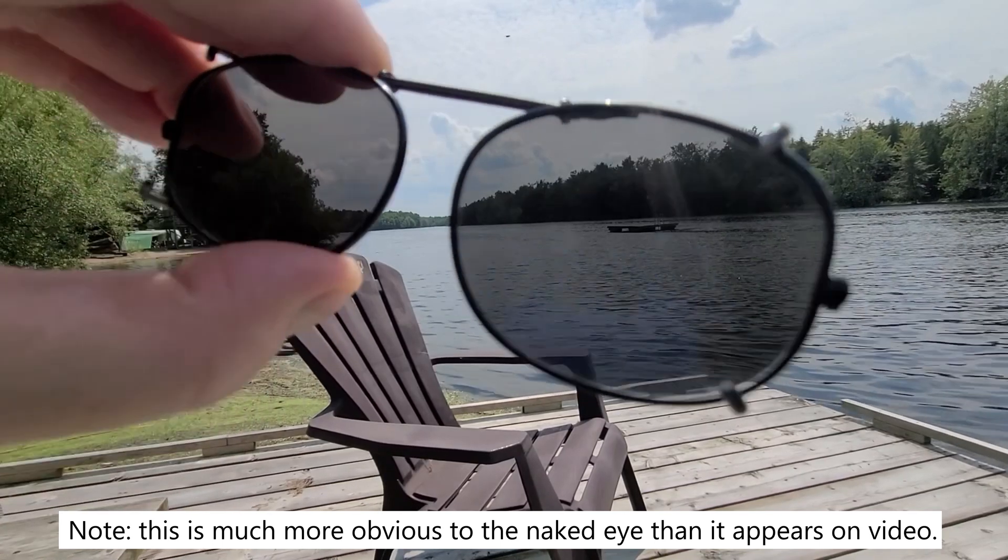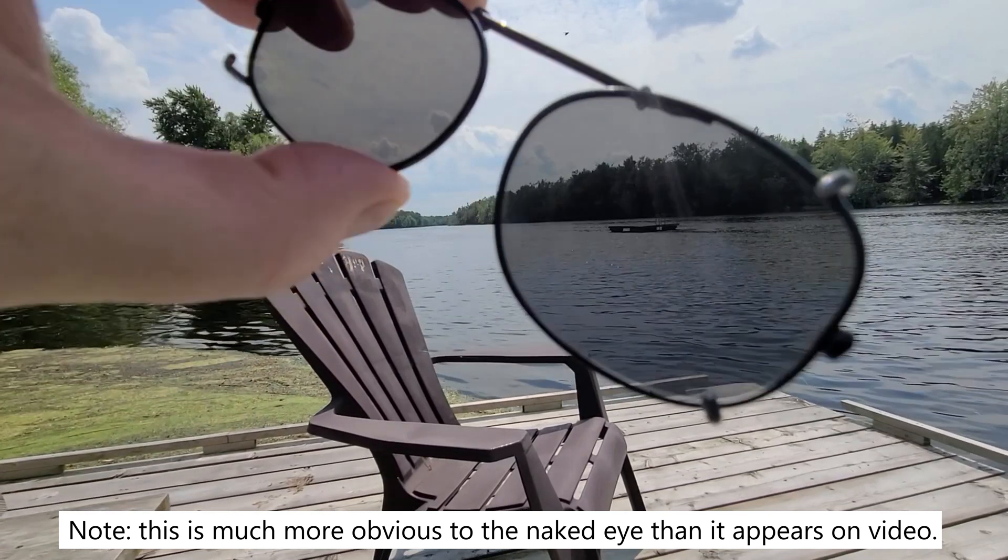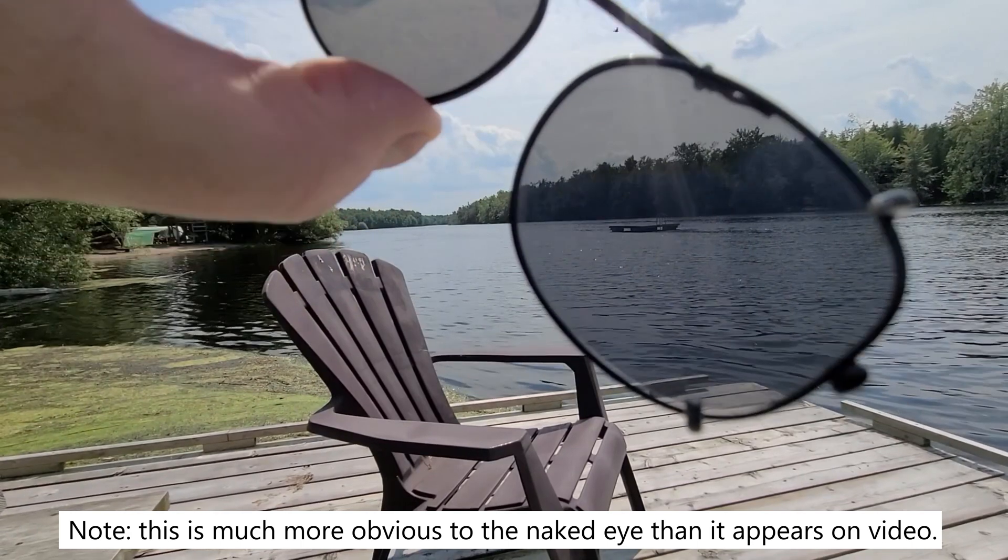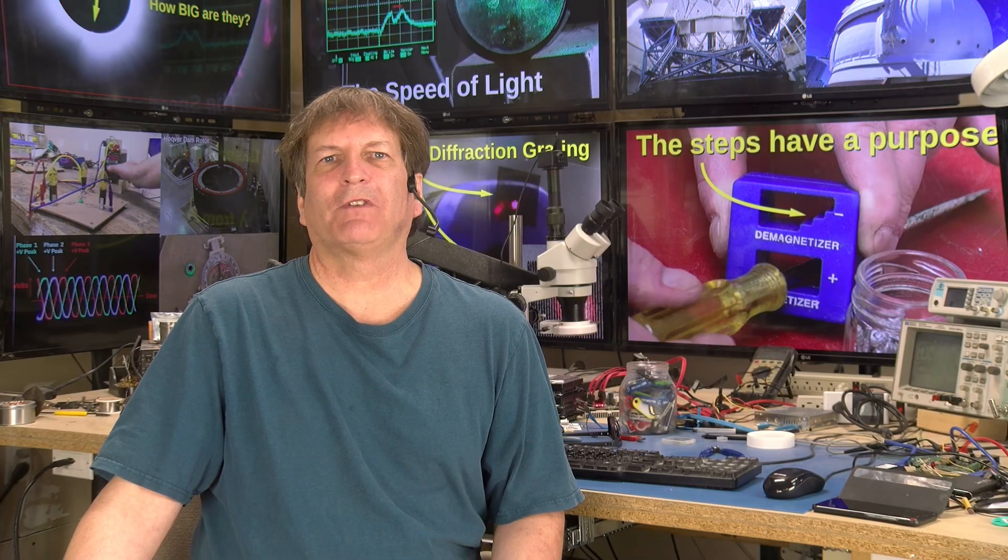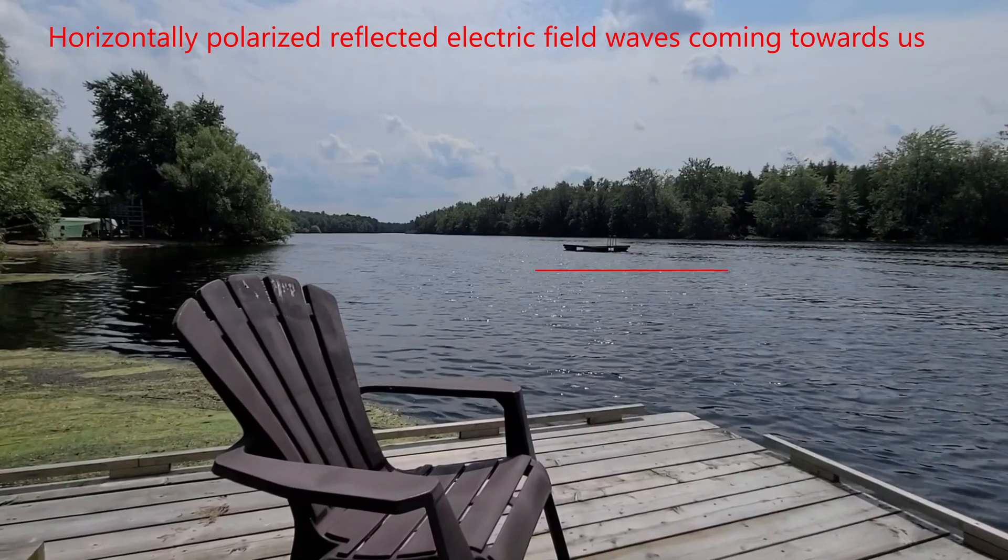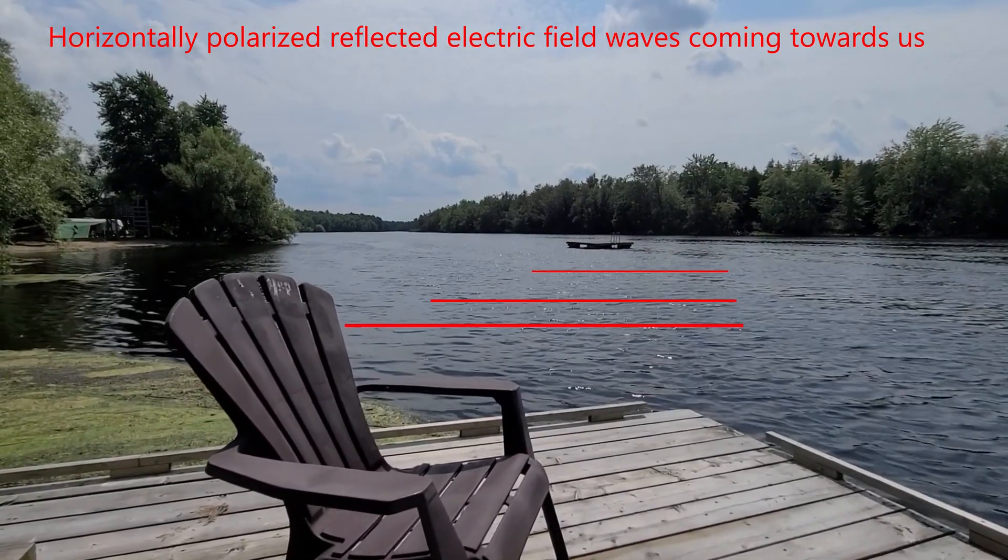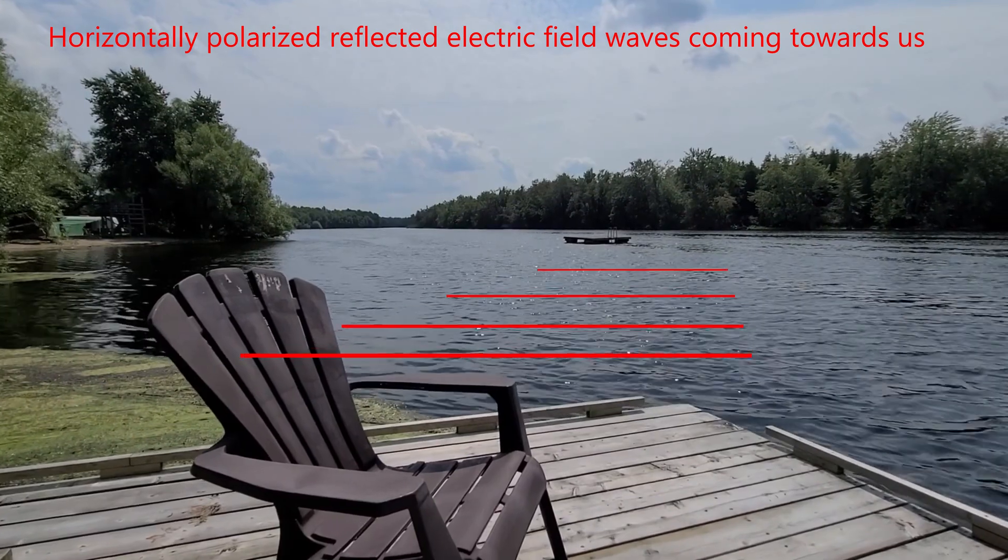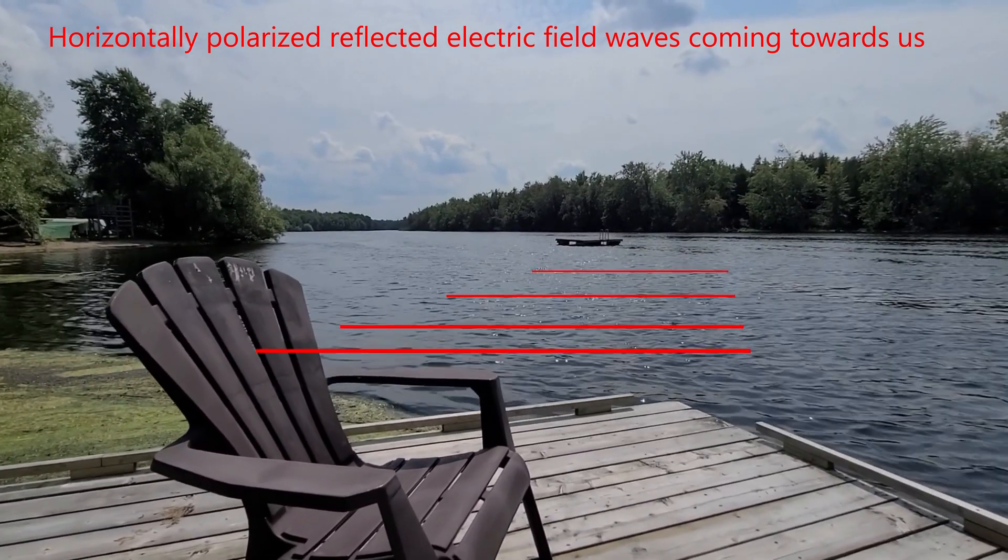And if you see that, well, the sunglasses are indeed polarized. And that's because the sunlight reflected from the surface of the water is strongly horizontally polarized. The electric fields and the light waves are parallel to the surface of the water.